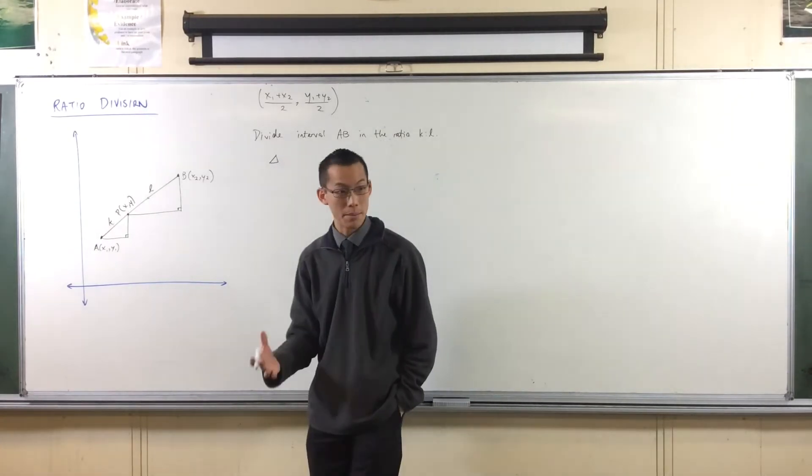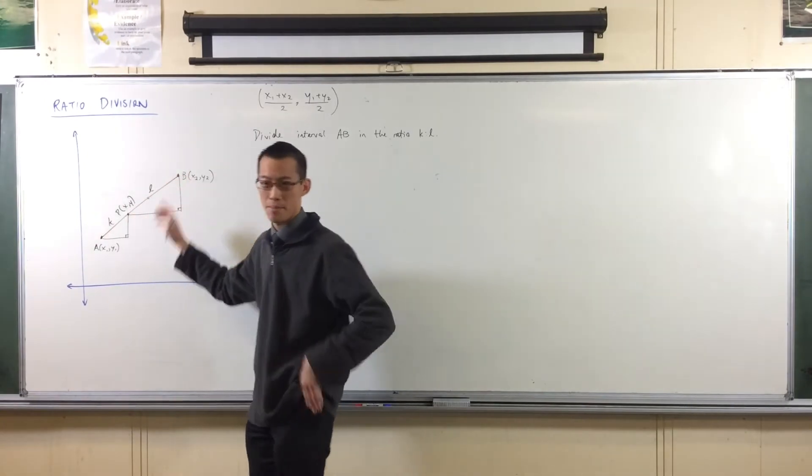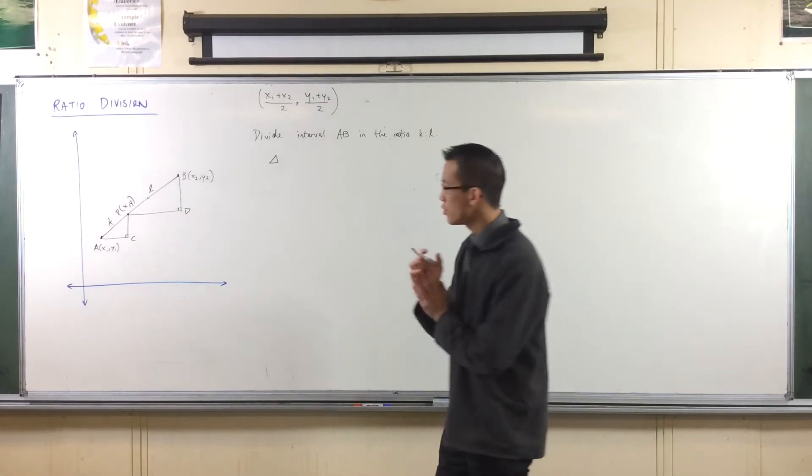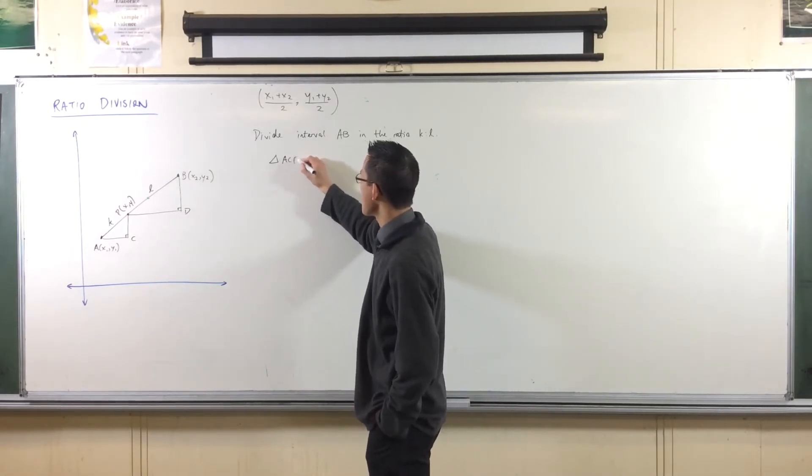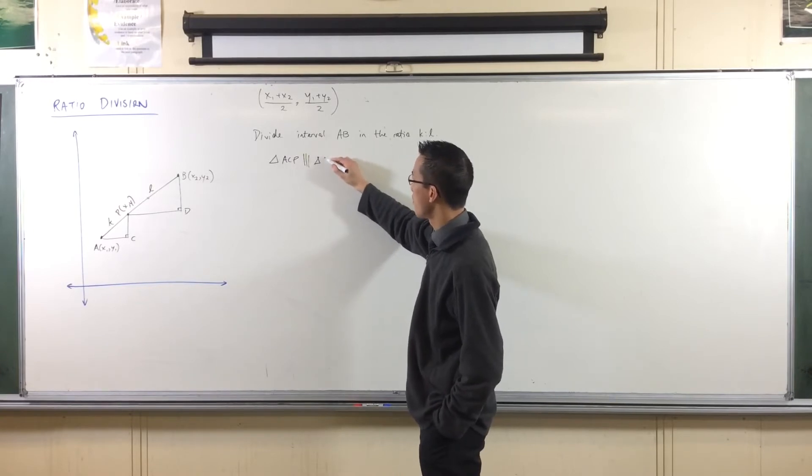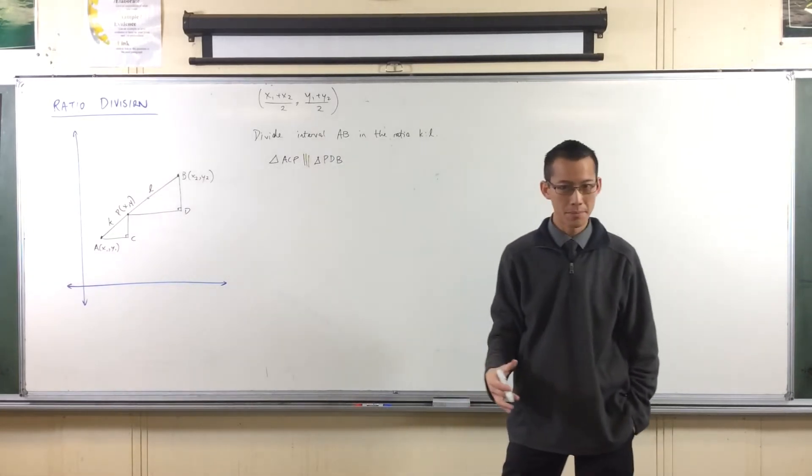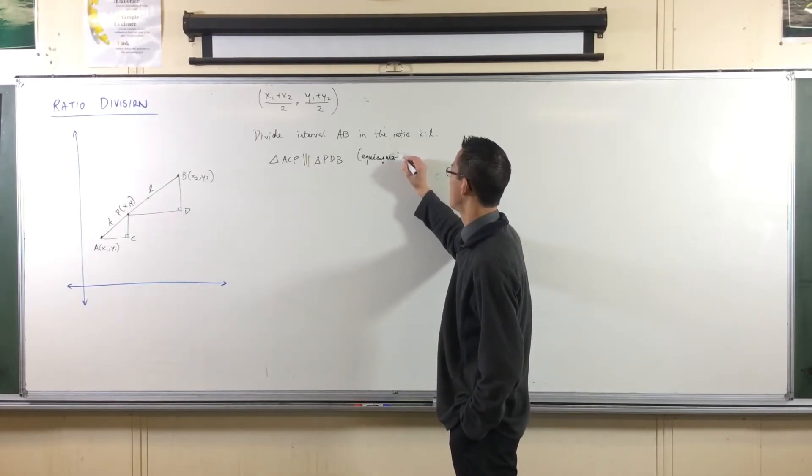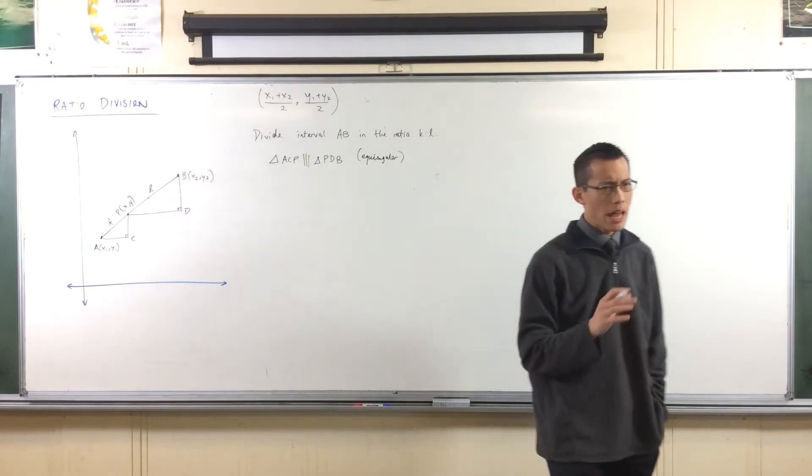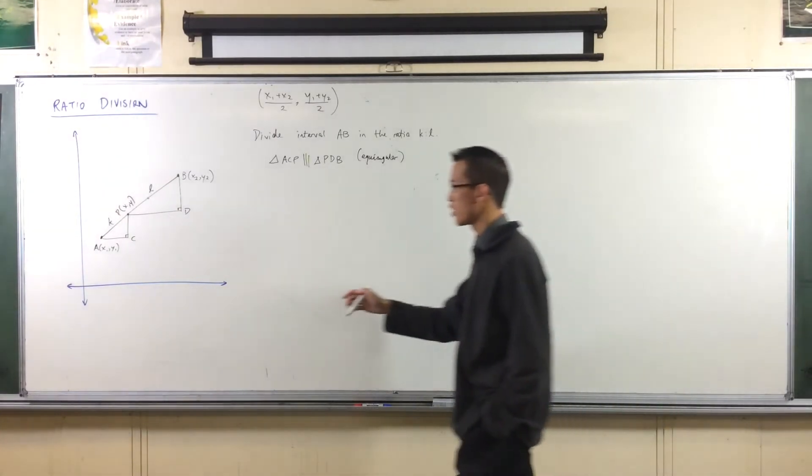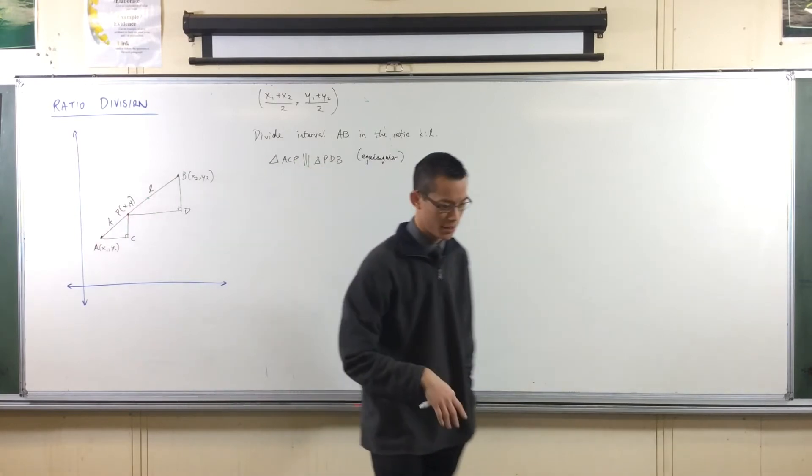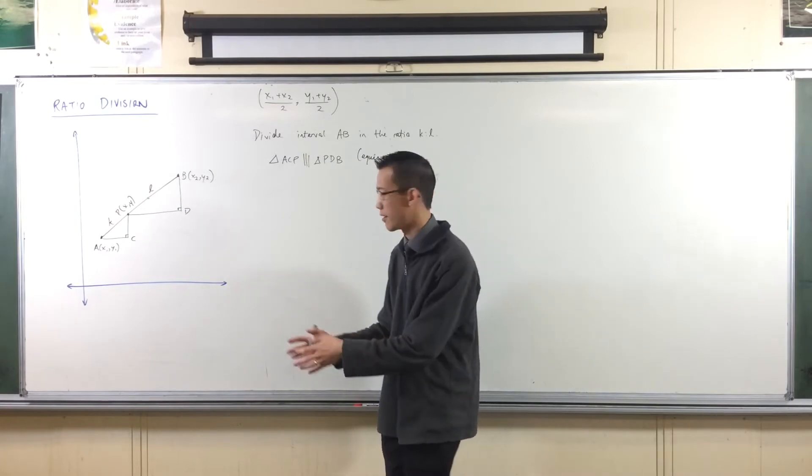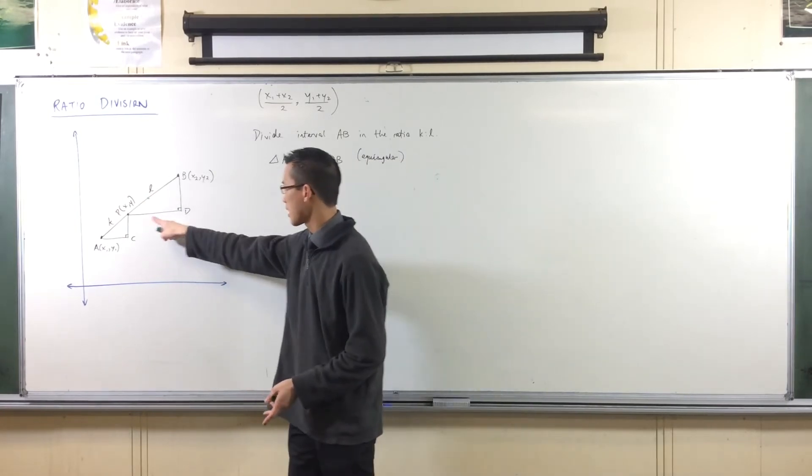Being that, triangle... Now, we need some more names here. I've got a, p, and b, but to be able to talk about the triangles, I'm going to call this c and a d over here. Triangles a, c, p, and triangle p, d, b are similar. If we wanted to prove it, the reason would be that they're equiangular. Now, I'm going to use this to take advantage of, well, I want to work out the x's, and then I want to work out the y's. So what relationships do I see between the x's and the y's in this diagram? I can see that, for instance, this length here, p, d.